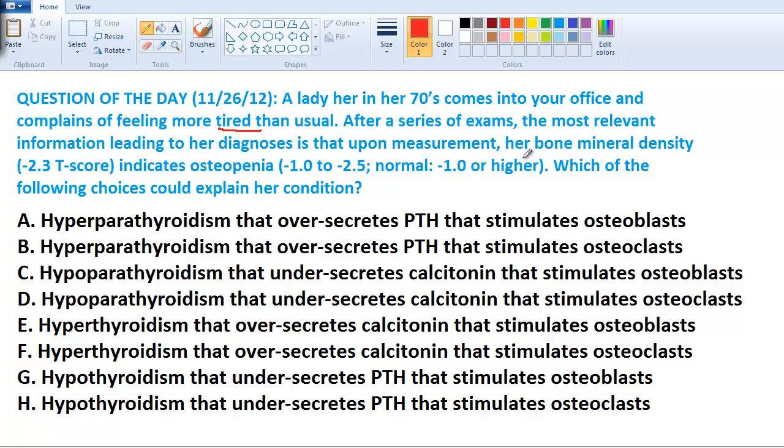Fatigued. A series of exams, relevant information. Let's look at bone mineral density. It's at negative 2.3 penia.